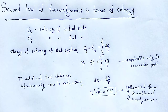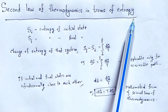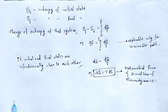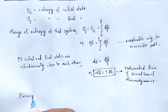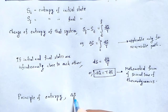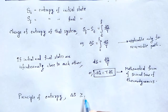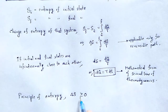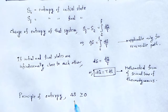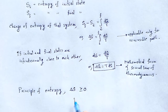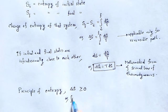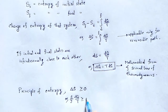Our aim is to define the second law of thermodynamics in terms of entropy. The principle of entropy states that the change in entropy of the universe is greater than or equal to zero. That is, ΔS = 0 for a reversible cycle, and ΔS ≥ 0 for an irreversible cycle. In nature, entropy always increases and never decreases. This can be written as the closed-cycle integral of dq/T ≥ 0.